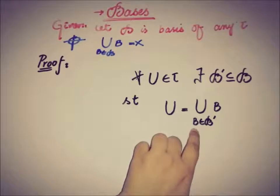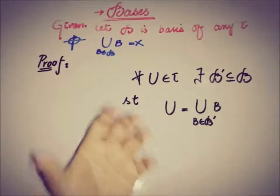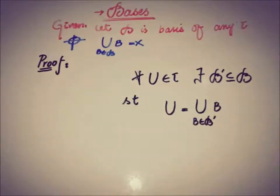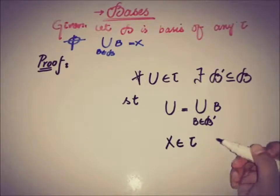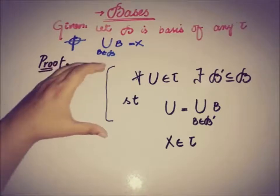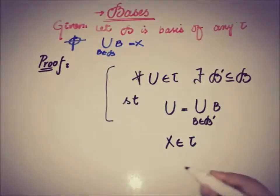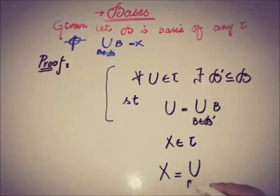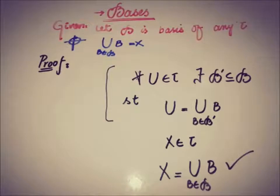It is easy to write that b belongs to B', where B' is a subset of B, in order to form the union U. By definition of the topology, we know that X belongs to tau, so X is also an open set. This definition is true for all elements of the topology, and since X is also an element of the topology, this definition is also true for X. Thus we can write X equals the union of b belonging to the collection B. And we have proved the first property using just the definition of the basis and the definition of the topology.